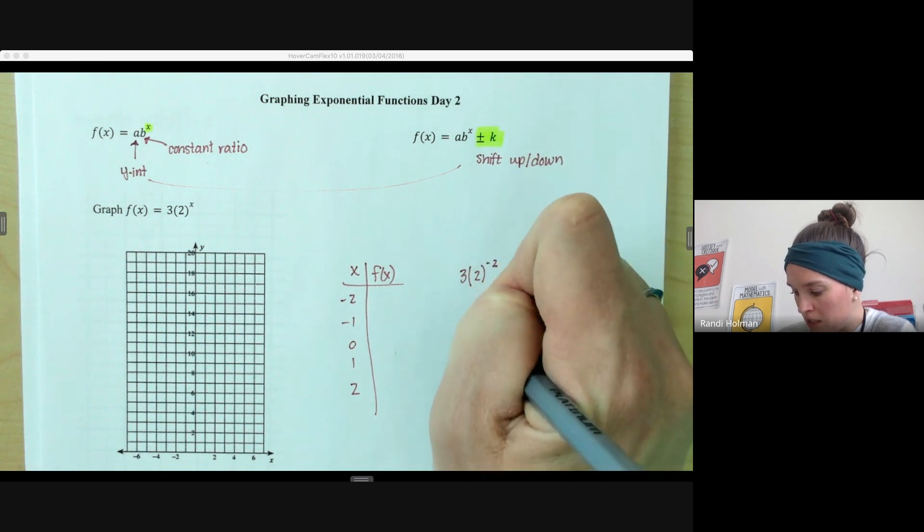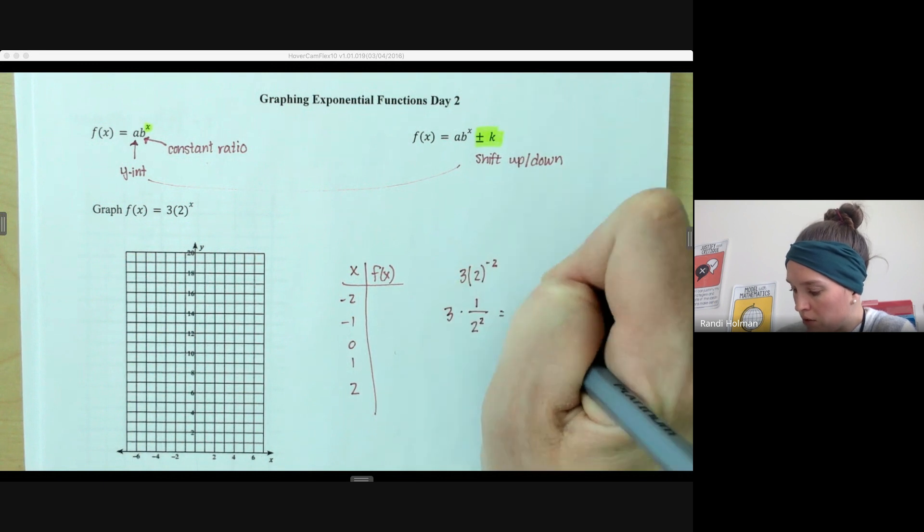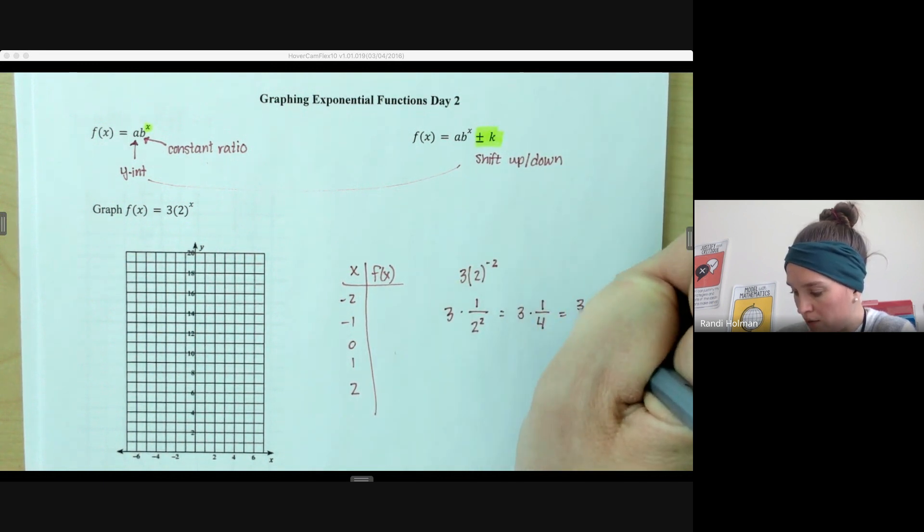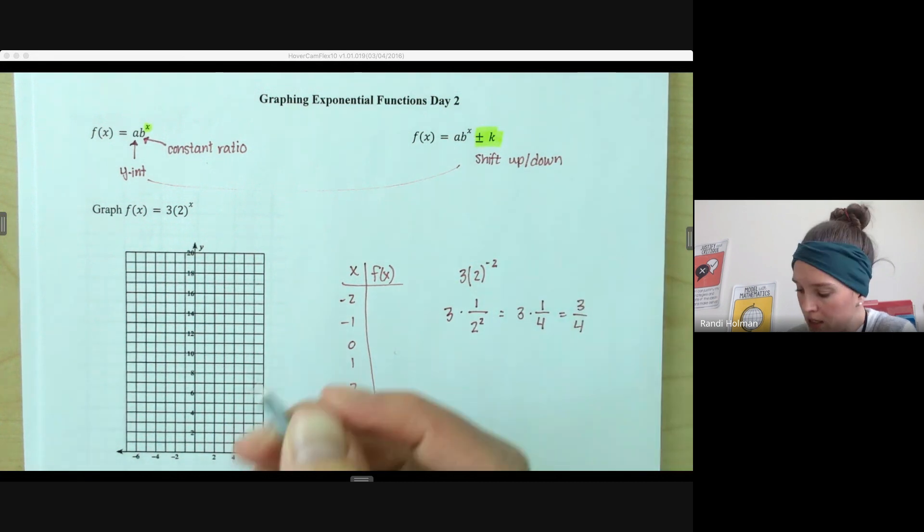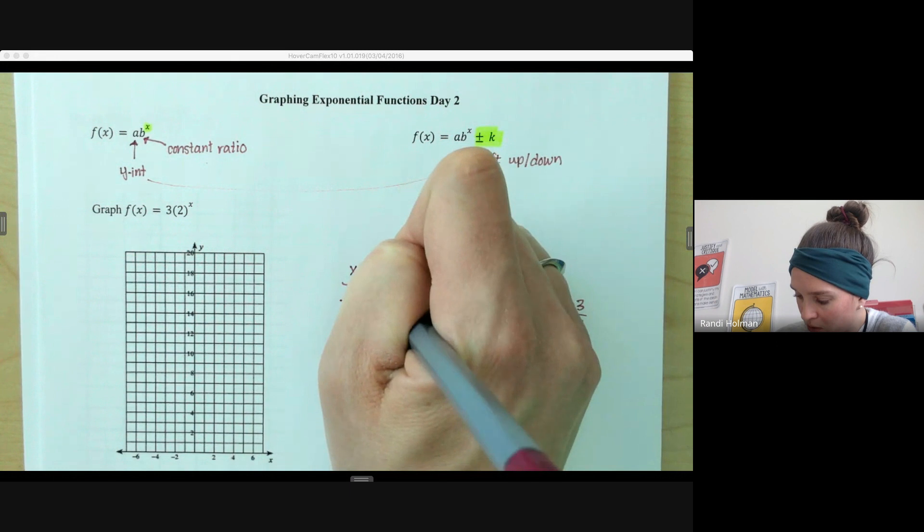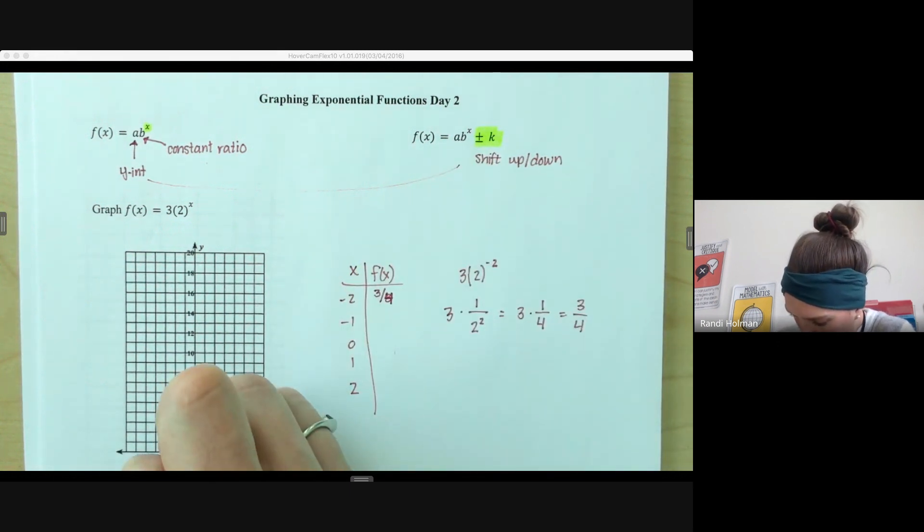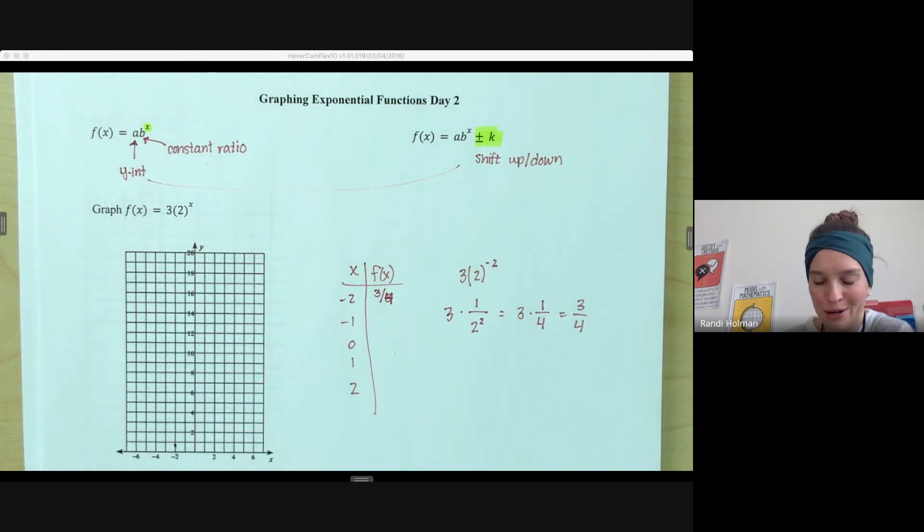So if I have 3 times 2 to the negative 2, remember the negative moves it to the denominator and then makes it positive. So we have 3 times 1 over 4, which is just 3 fourths. So negative 2, we're going to be at about 3 fourths, which is more than half, less than 1. So negative 2 here, that would be halfway. So we're a little bit more than halfway, halfway between halfway and 1.